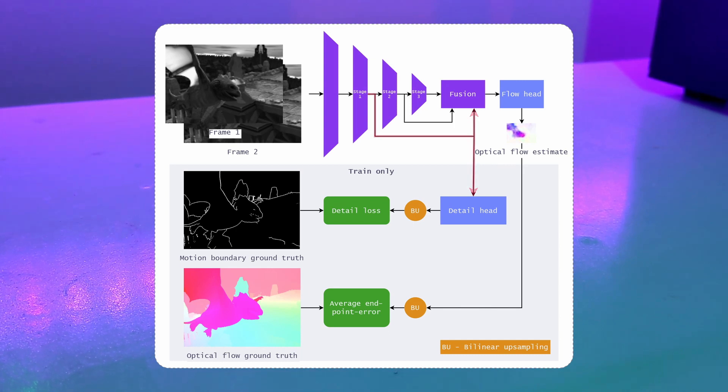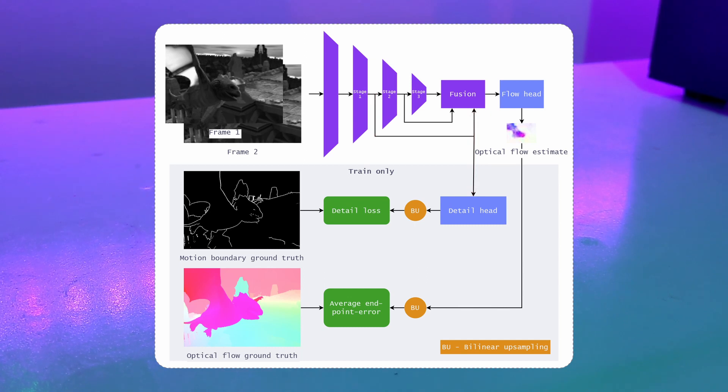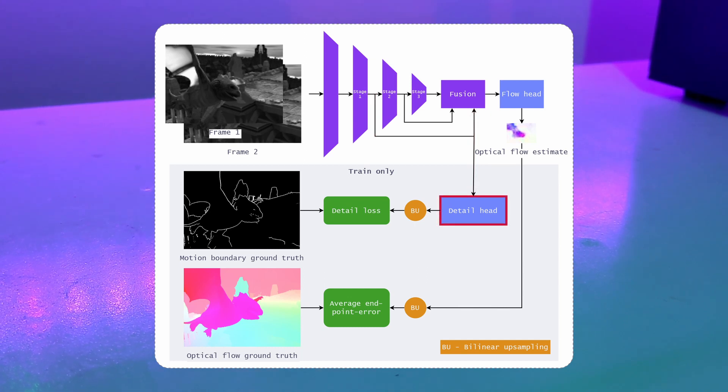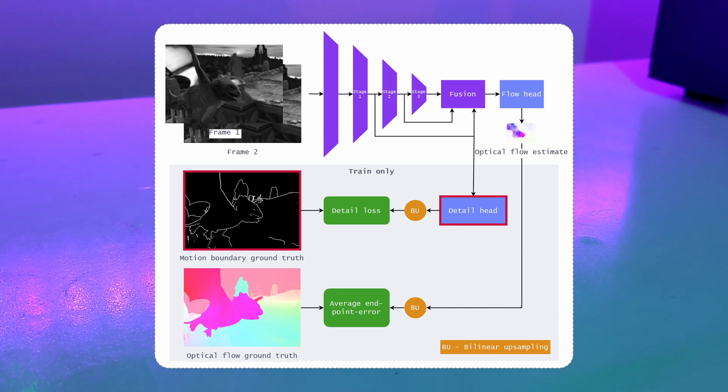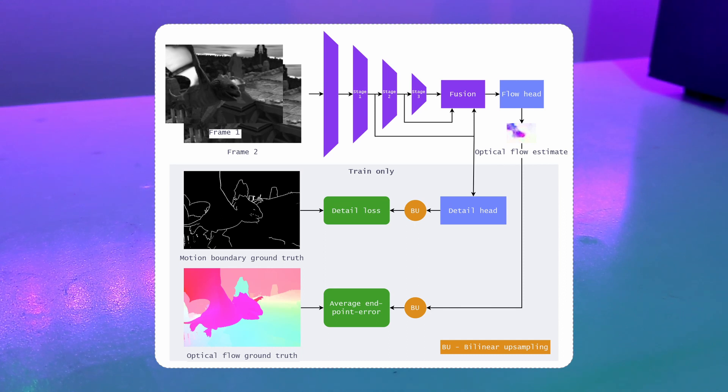We guide the path to encode low-level spatial information by adding an auxiliary train time-only detail head and training it on motion boundary ground truth. This approach improves optical flow performance without impacting inference latency.